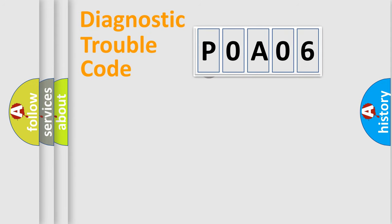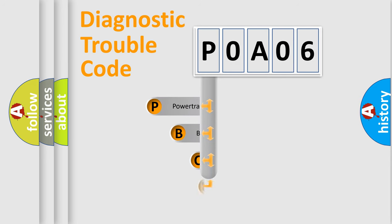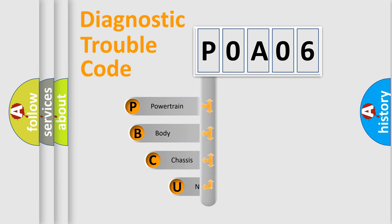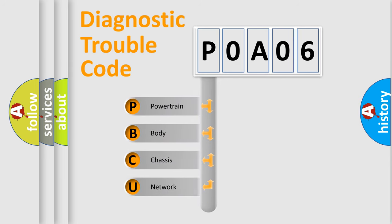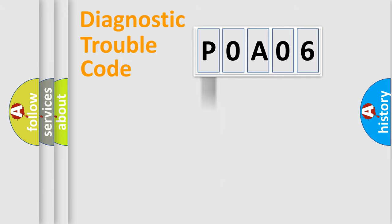First, let's look at the history of diagnostic fault code composition according to the OBD2 protocol, which is unified for all automakers since 2000. We divide the electric system of an automobile into four basic units: Powertrain, Body, Chassis, and Network. This distribution is defined in the first character of the code.